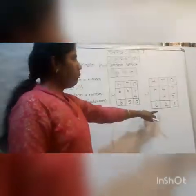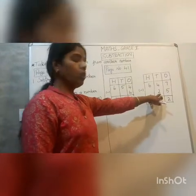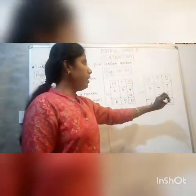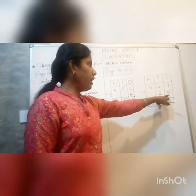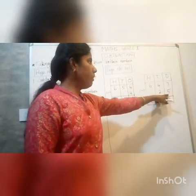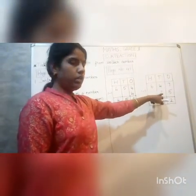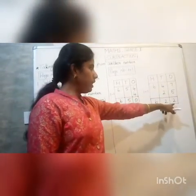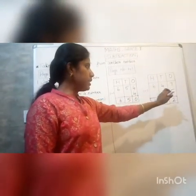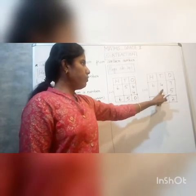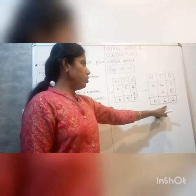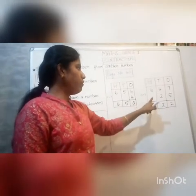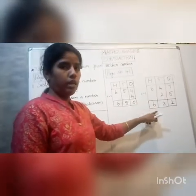For subtracting two-digit numbers from a three-digit number: we have ones, tens, and hundreds. For example, subtracting 25 — five in ones place and two in tens place. We first subtract the ones place and write the answer, then the tens place: 4 minus 2 is 2. Since we don't have any number in the hundreds to subtract, we write the same number down.